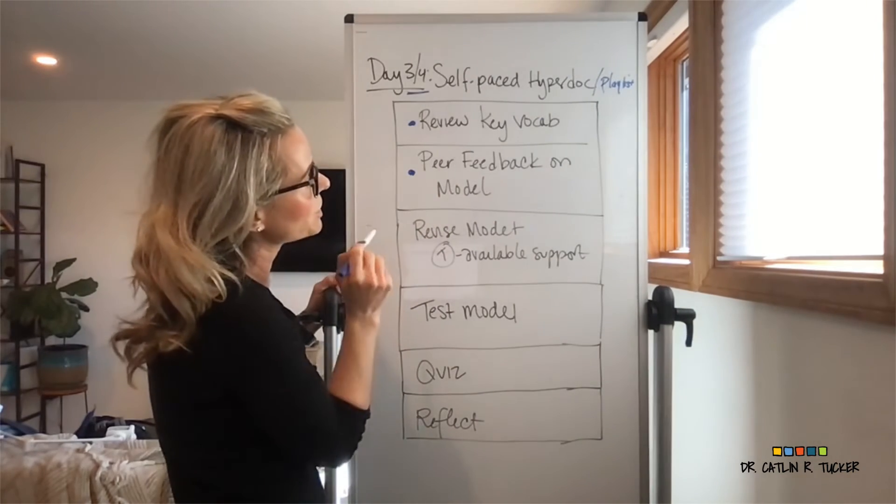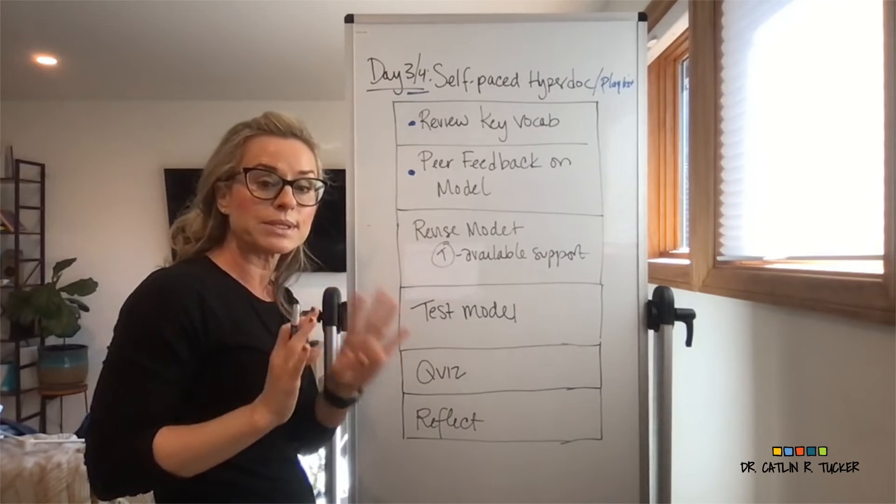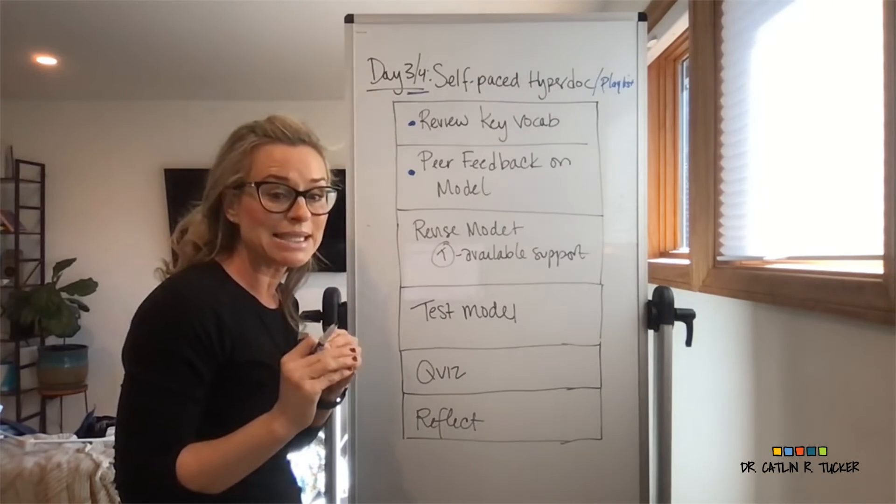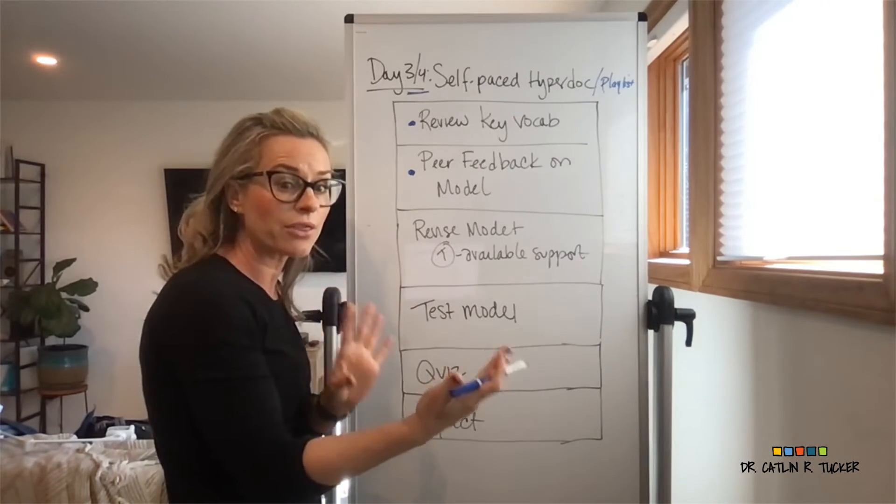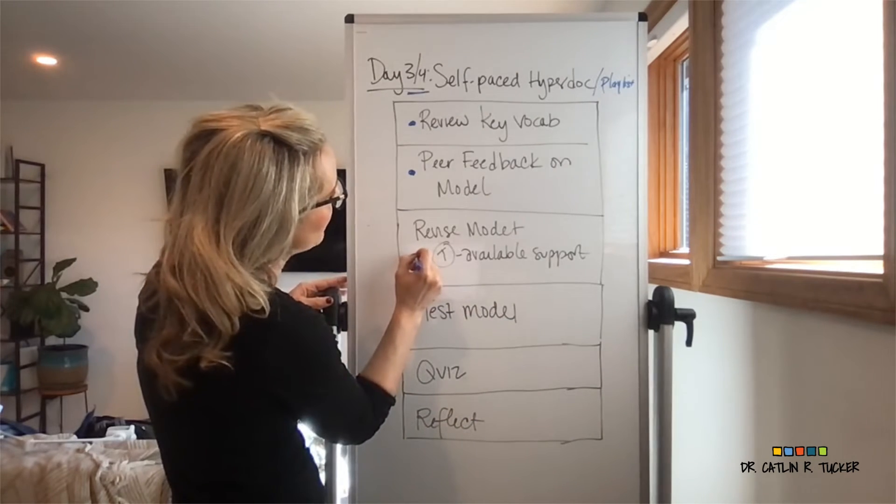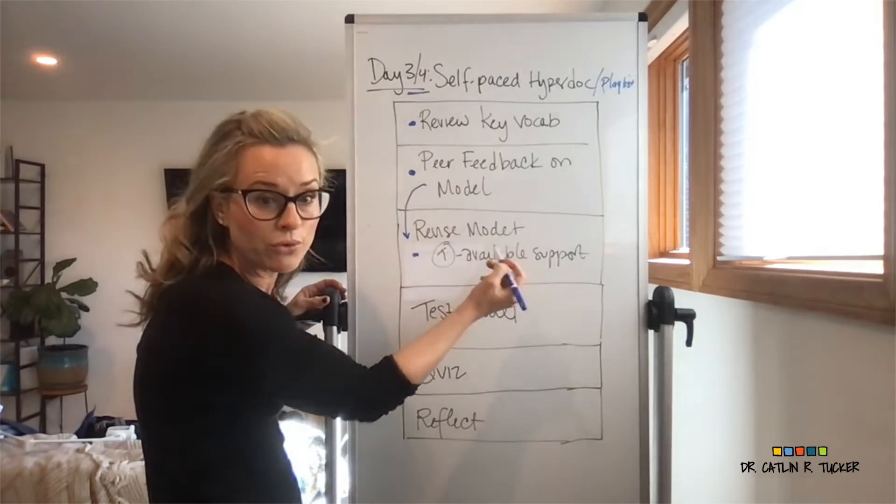Getting some peer feedback on their model—can we have students exchanging models? Maybe give them a peer feedback choice board with some options for how they respond to each other, maybe even some sentence stems to help them craft a thoughtful, specific kind response. Then we have revise the model based on what they found out from their peers. Can they improve or change the model?